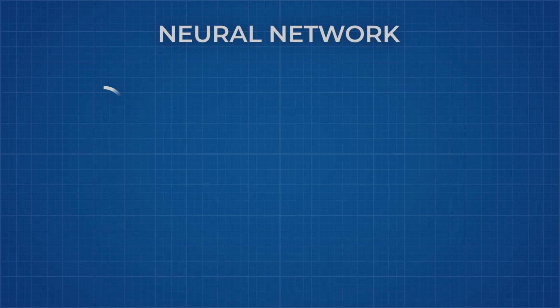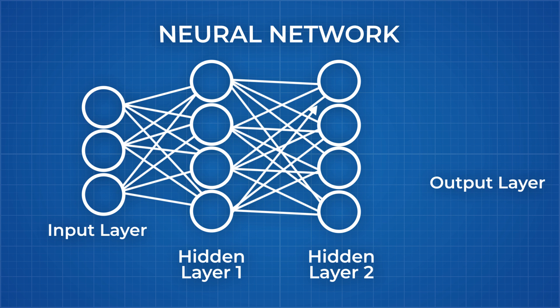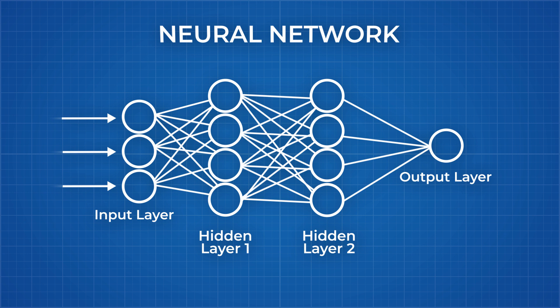During the training stage of the neural network machine learning, you first feed the network your input variables at the input layer. Which in our example is the patient's age, body mass index, the number of pregnancies she has had,